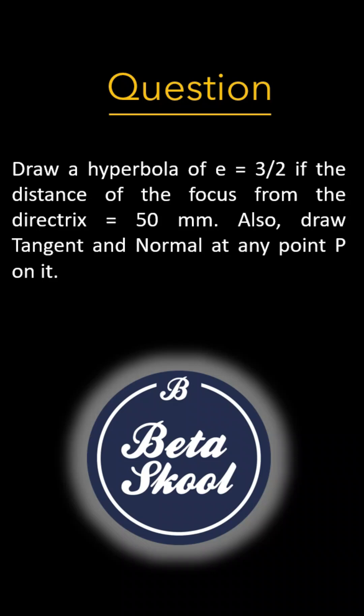Hello viewers, let's learn how to draw a hyperbola by focus-directrix method. The question reads: Draw a hyperbola of eccentricity 3/2 if the distance of the focus from the directrix is 50 mm. Also, draw tangent and normal at any point P on it.